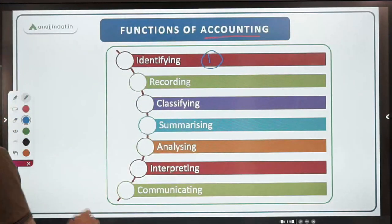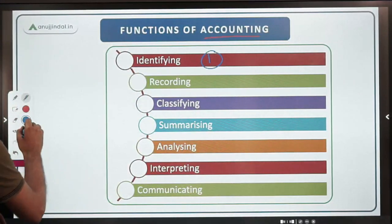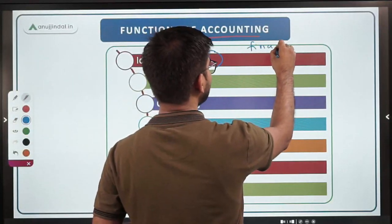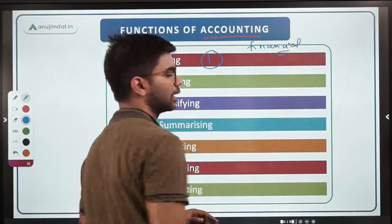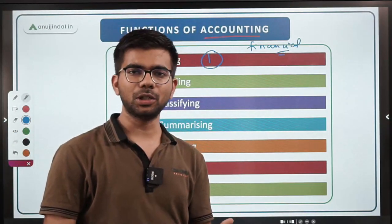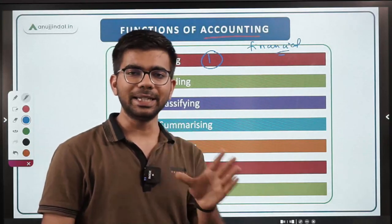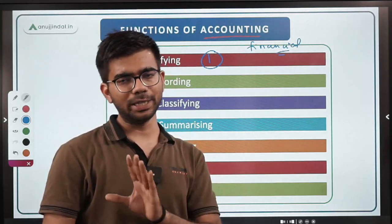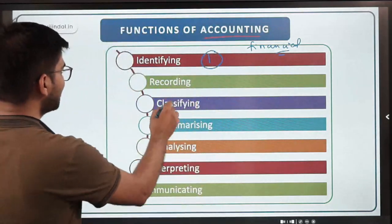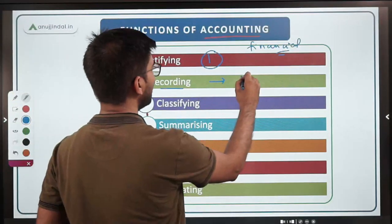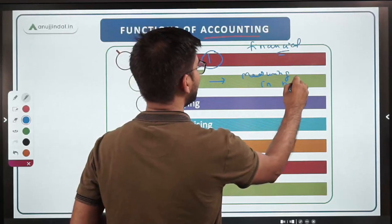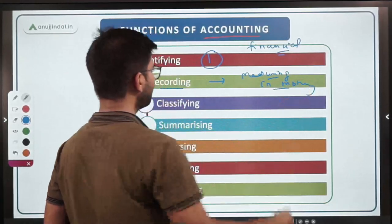First, identification: in accounting, we record only those transactions which are financial in nature. We only record financial transactions — non-financial transactions are never recorded. This is also one of the limitations of accounting, as we ignore qualitative or non-financial things. After identification comes recording, which means measuring transactions in money terms.